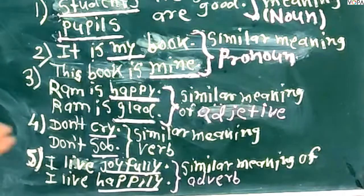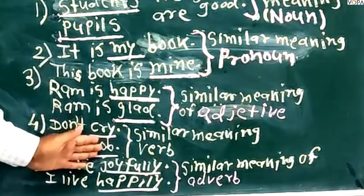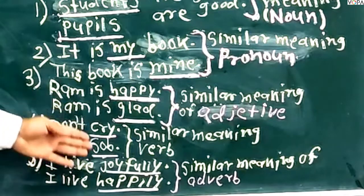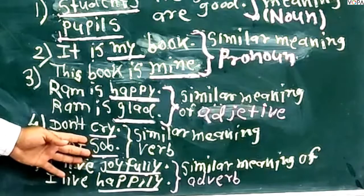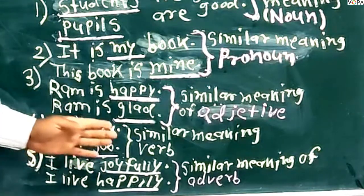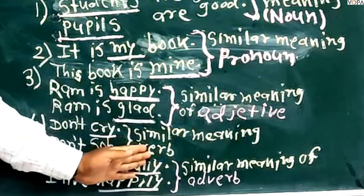Look at another example. Don't cry. Don't sob. In this sentence, cry and sob are verbs, and both are similar meaning words. So this is the example of similar meaning verbs.